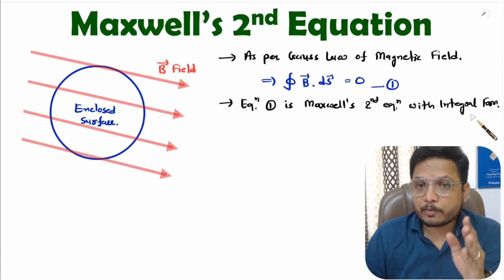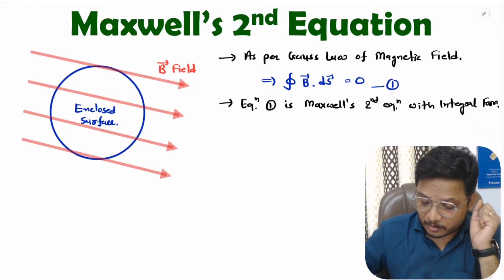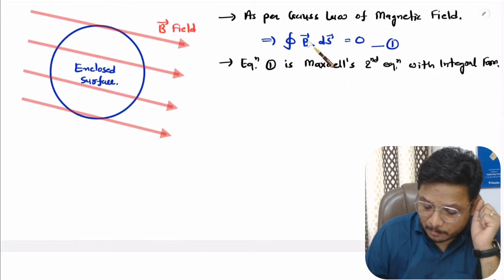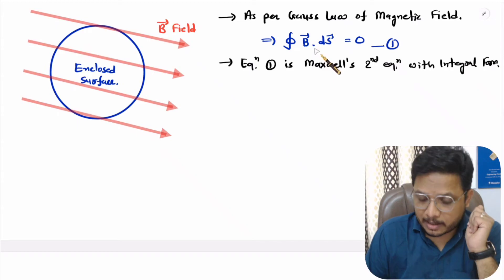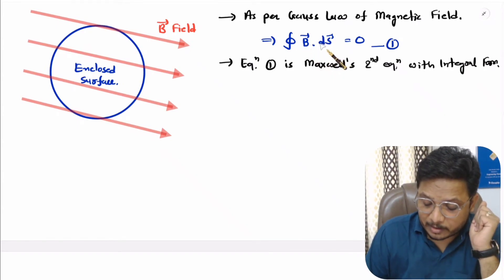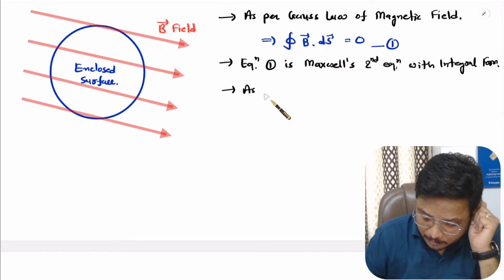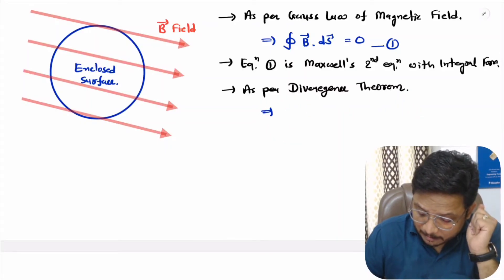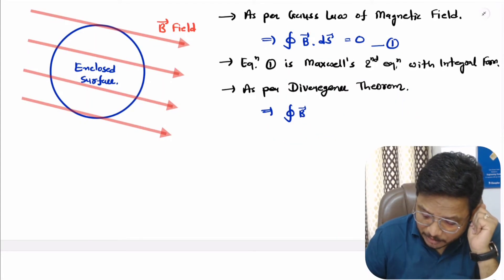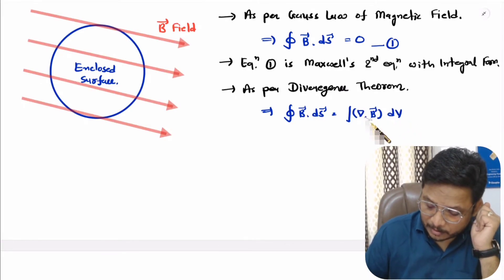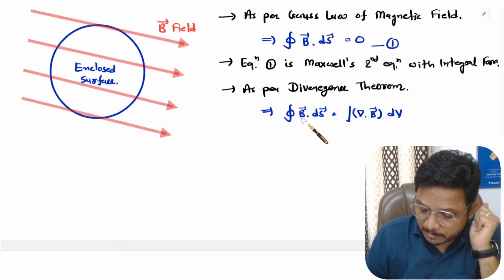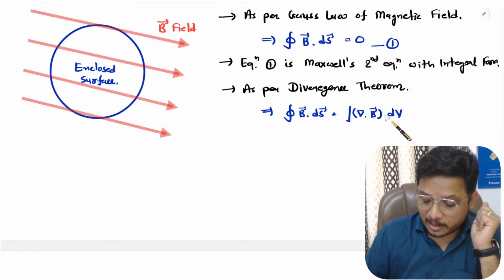Now I will derive Maxwell's second equation with differential form. We have magnetic field with surface integration. To get the differential form, we can apply the divergence theorem. The divergence theorem can convert surface integration into volume integration. So as per the divergence theorem, if you have a surface integration of a function, that equals the divergence of the function with volume integration.